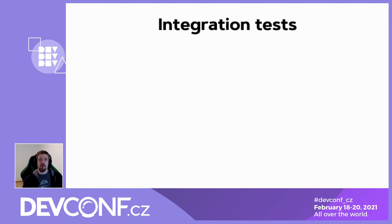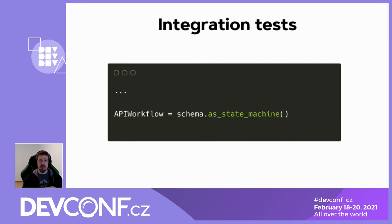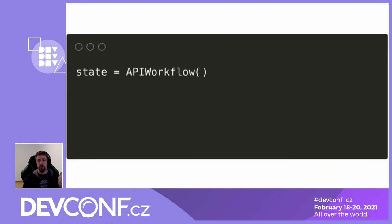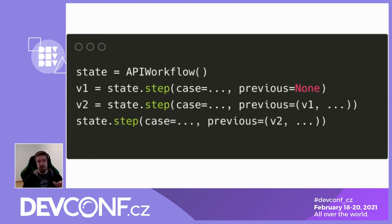Let's take a look at how we can write a test with our Python API. This implementation is based on Hypothesis state machines that describe all possible transitions within the schema. Let's say you already loaded your schema from the previous example. Then you need to create a state machine first and expose a test class, which is a regular unit test class. Then you run it with PyTest. In case of errors, you'll see a report with an error message, response payload, and additionally a Python snippet that you can copy-paste to reproduce the failure.